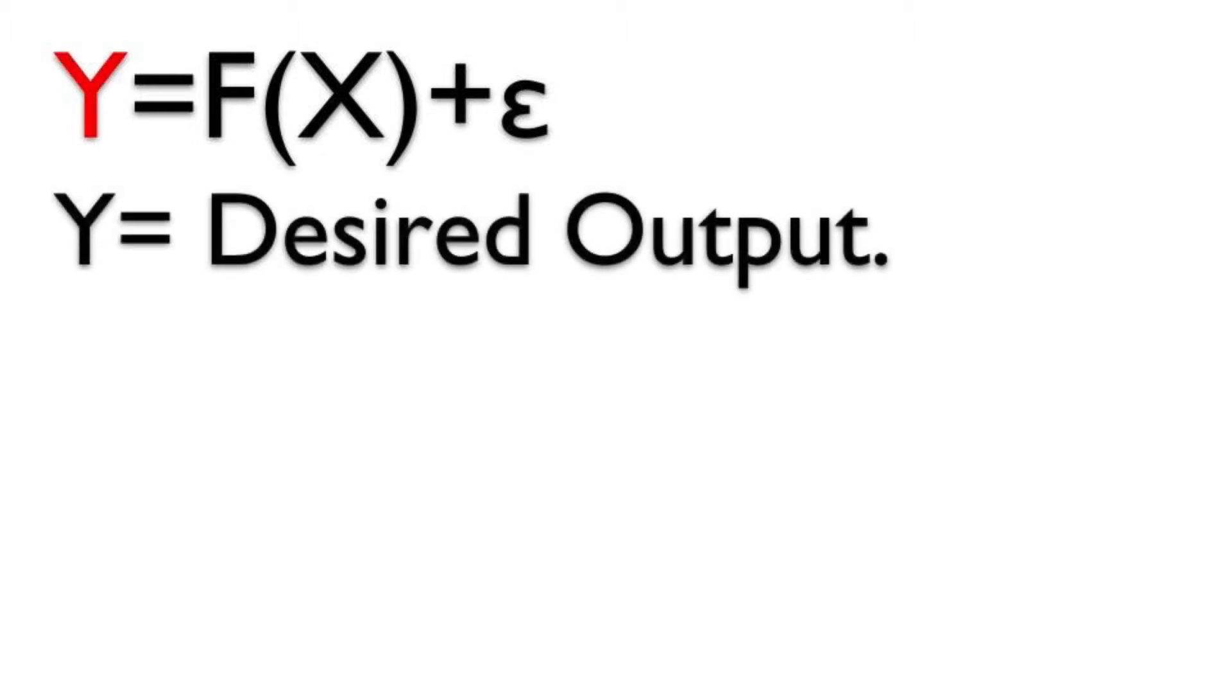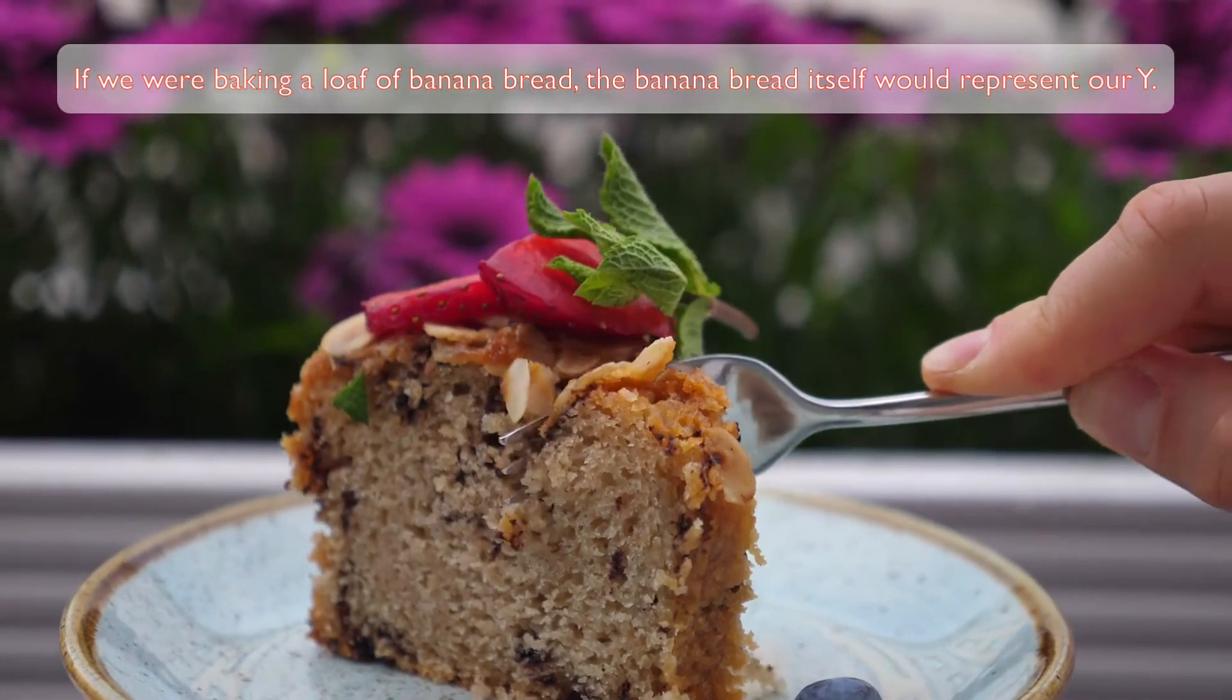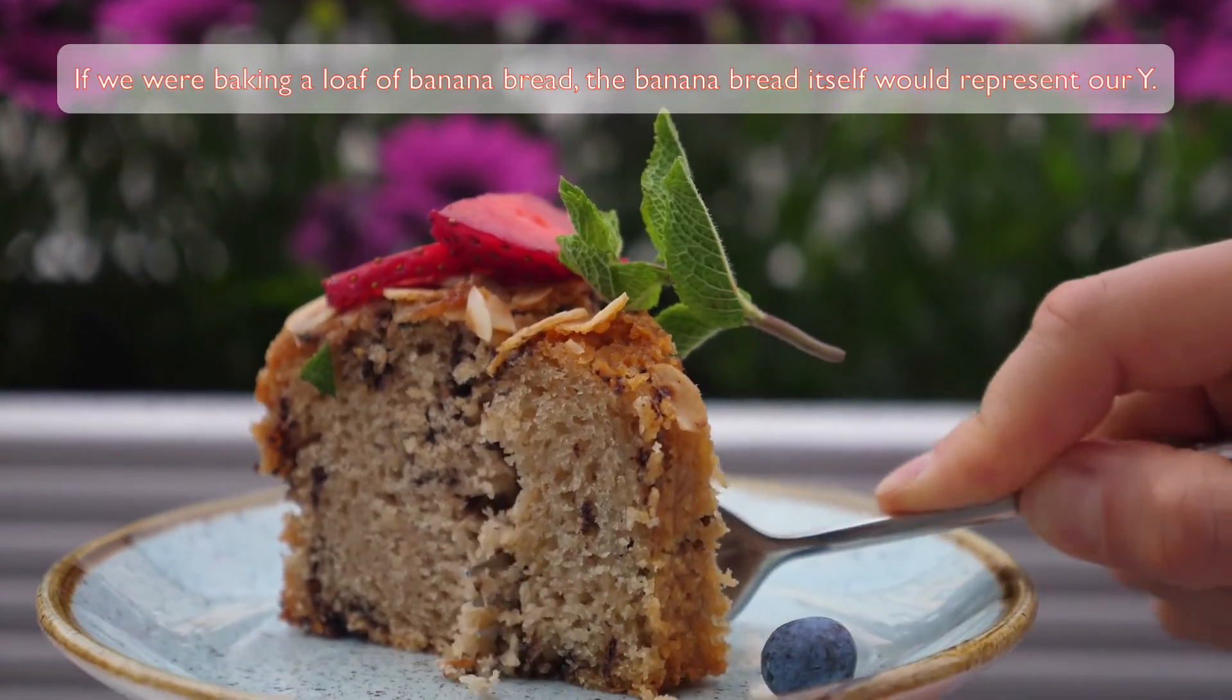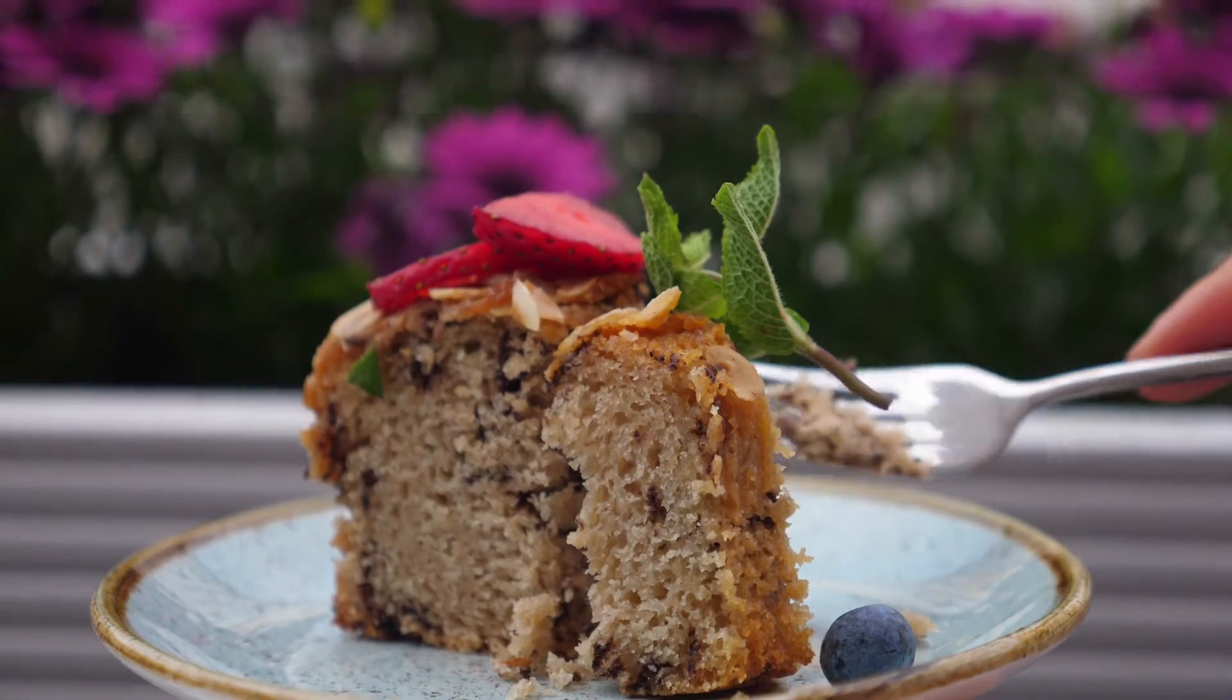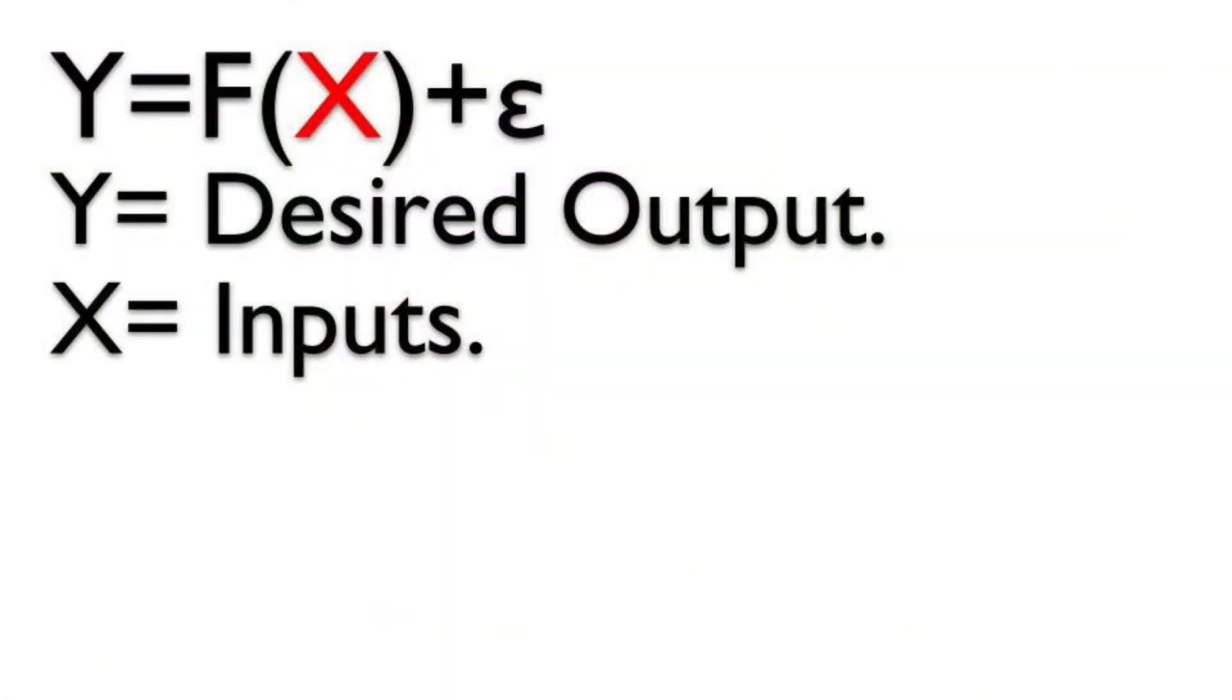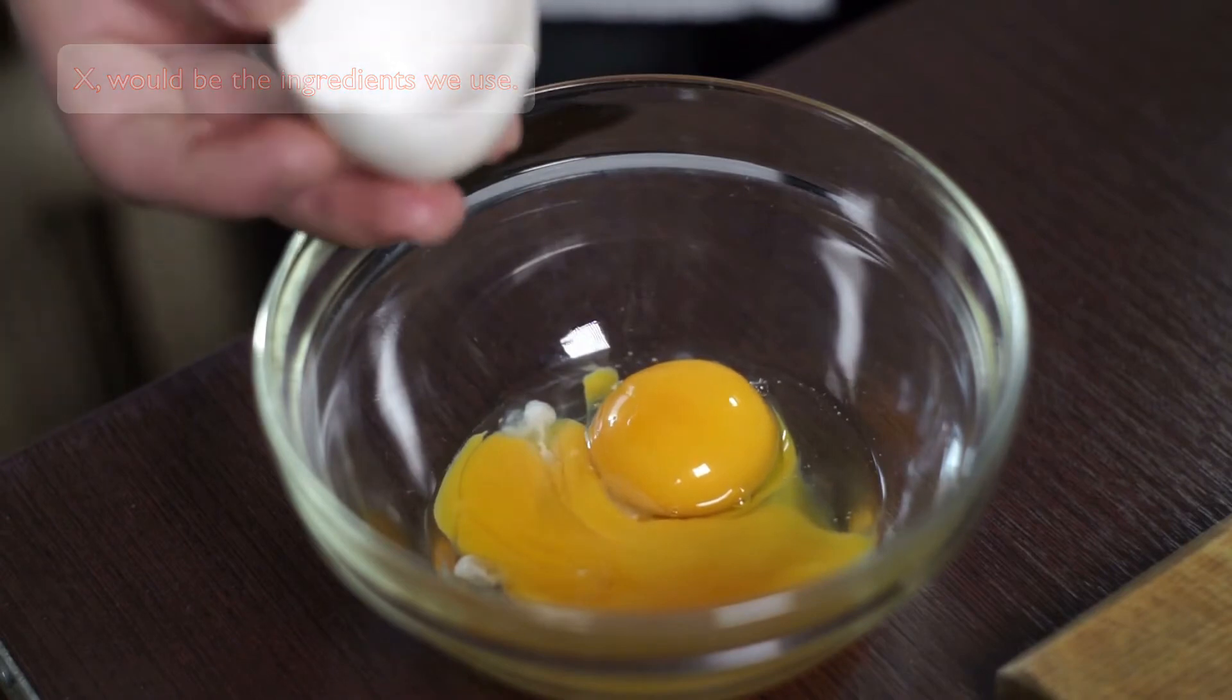Let's look at the formula. There are four essential parts we must consider in the problem solving formula. First, we must consider Y, which represents the desired outcome, result, or goal we are trying to achieve. For example, if we were baking a loaf of banana bread, the banana bread itself would represent our Y. Next, we must consider the inputs that are used to create the Y.